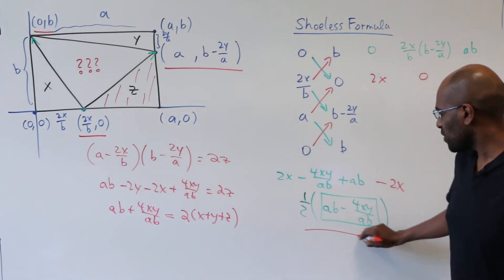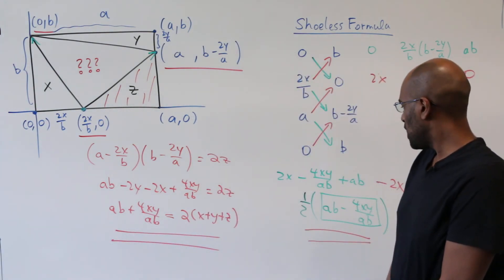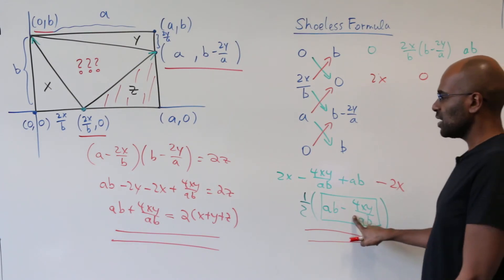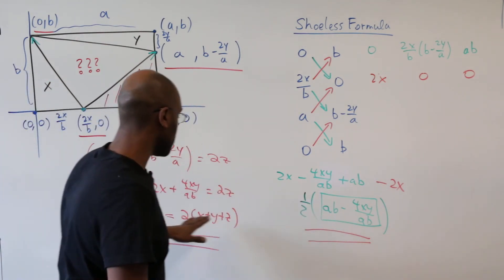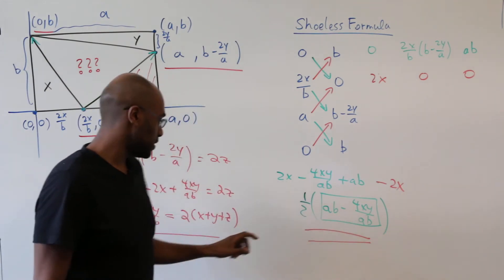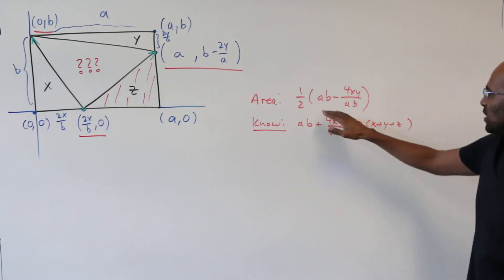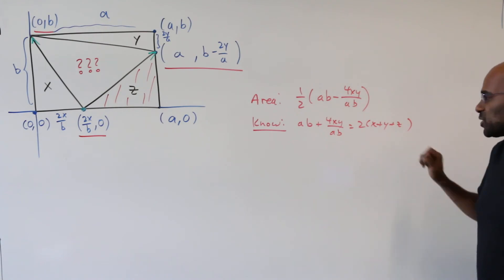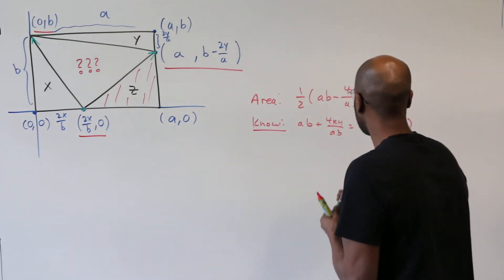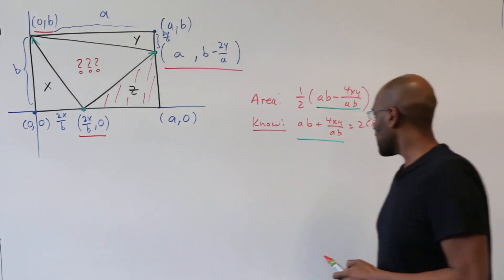Okay so here's our area that we're interested in and here's an expression that we have from our third triangle. And you notice that the quantity we want looks eerily similar to the one that we have something for. So we're going to now transfer all of this and use algebra to figure out a way to figure out what this quantity is using the fact that we know this. Okay so the area that we have in question is one half of this quantity and we know that this quantity here is 2(x + y + z).